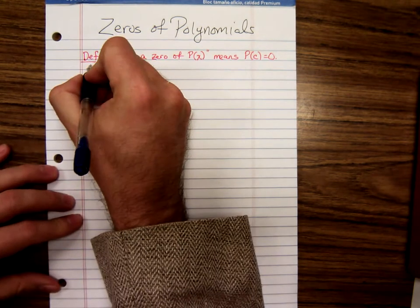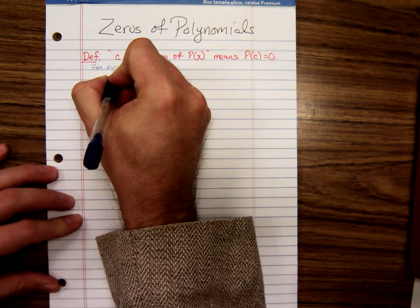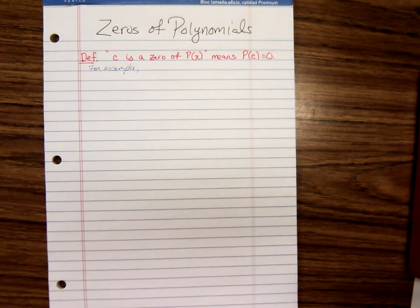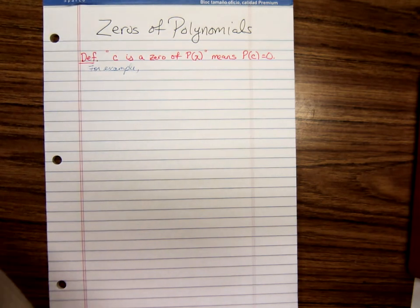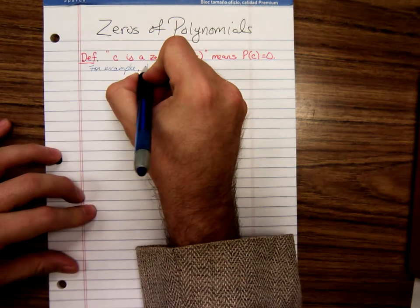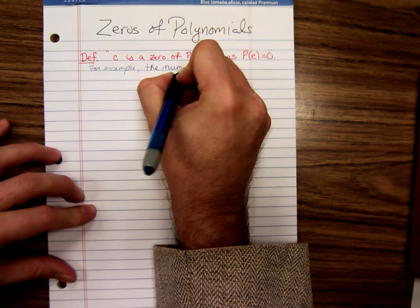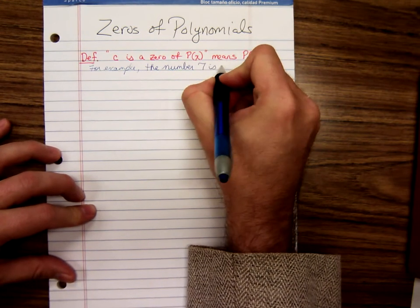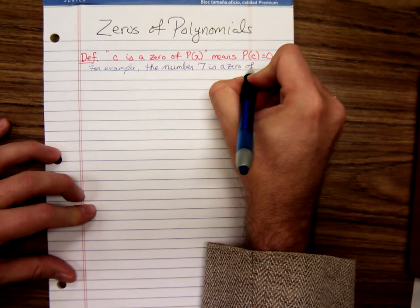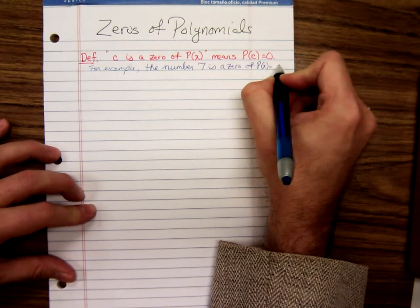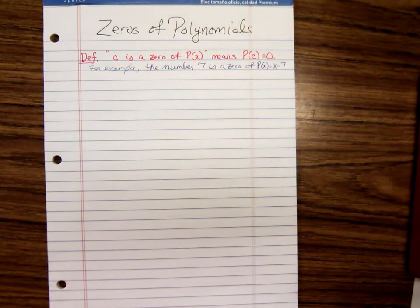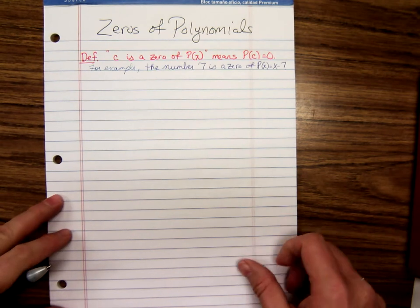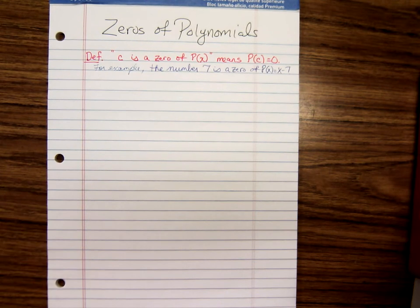For instance, for example, the number seven is a zero of the polynomial P of X equals X minus seven. Very easy polynomial or linear one. If you plug 7 in for X, you're going to get zero. I think everyone can see that, can agree with that.